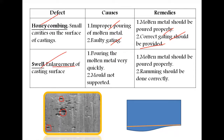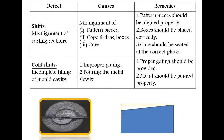Swell is an enlargement of the casting surface — an additional surface produced on the component. It is caused by pouring molten metal very quickly when the mold is not properly supported and ramming of the mold sand is insufficient. To avoid this, molten metal should be poured properly and ramming should be done uniformly across all areas.